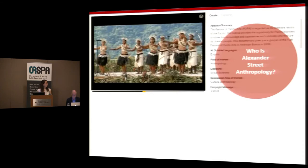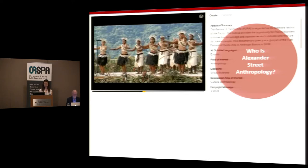I wanted to start with a little bit of context. Some of you may recognize this slide — I used it last year. Alexander Street is an academic database publisher and content provider in the humanities and social sciences, and our primary audience is in the higher ed space. We curate collections of streaming video used largely in the undergraduate space for teaching courses, and we also do collections of digital primary sources used largely at the graduate level. We focus largely on the humanities and social sciences, though we have gotten a little bit into STEM.